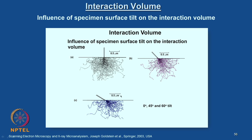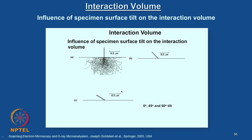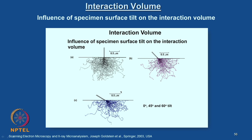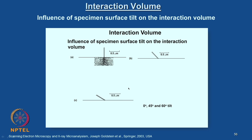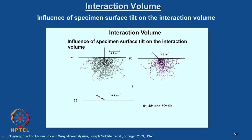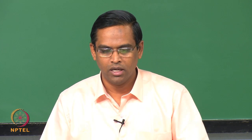Before I go into more detail on image formation and interpretation, I would like you to look at the equipment now. I will show you one of the scanning electron microscopes we have in our lab — I will take you to the lab and I would like you to see all the components in detail and their functions, so that whatever we have discussed so far you will be able to appreciate in a much clearer manner.